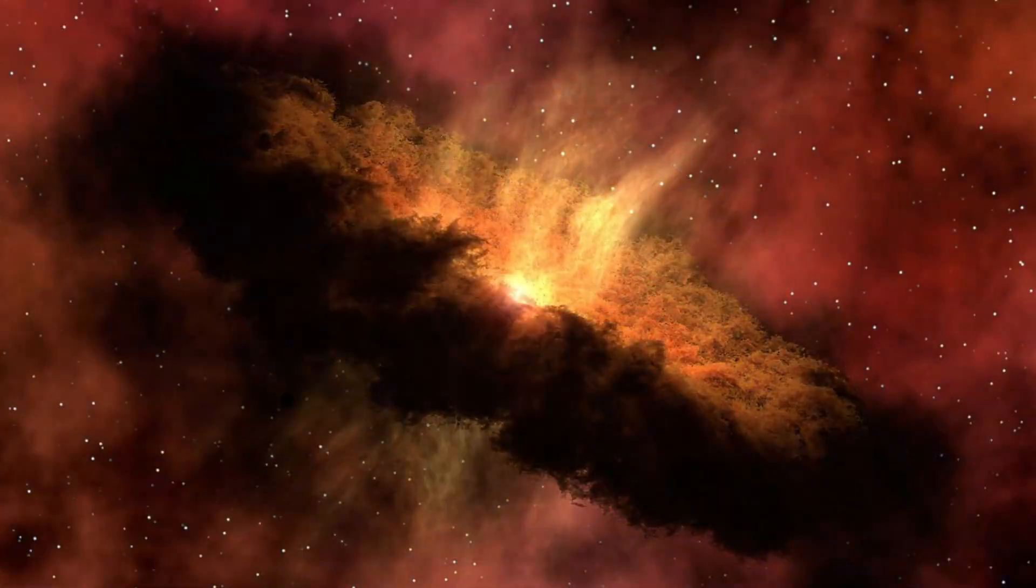The Earth is rotating because of the way it was formed. About 4.5 billion years ago, a huge cloud of dust and gas collapsed under its own gravity and started to spin. As the cloud spun faster, it flattened into a disk and formed the Sun at the center. The leftover material in the disk clumped together and formed the planets, including the Earth.